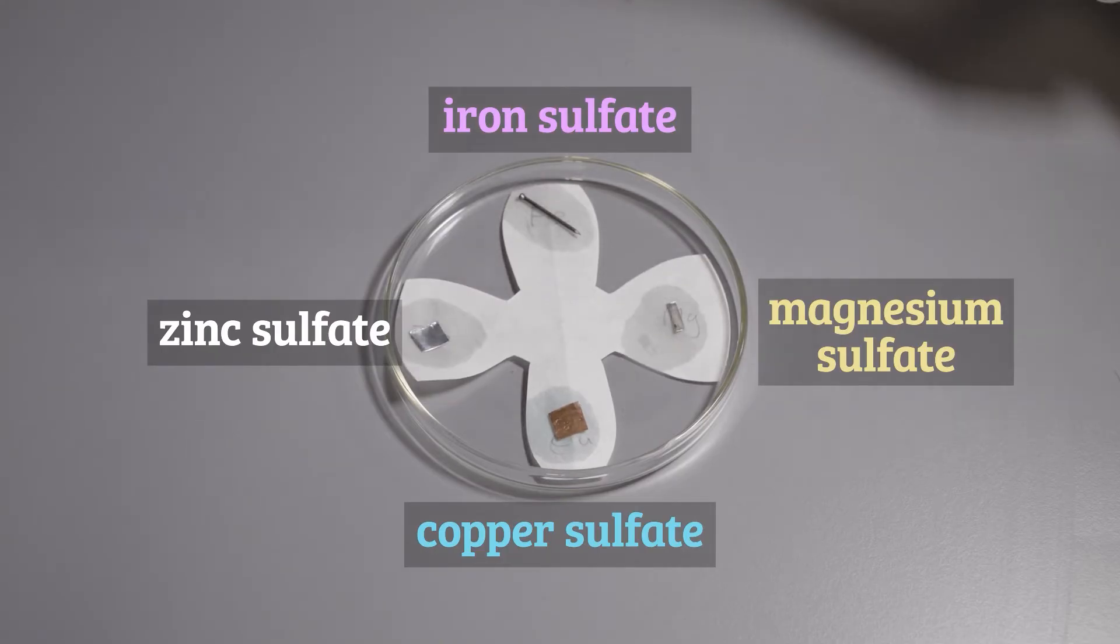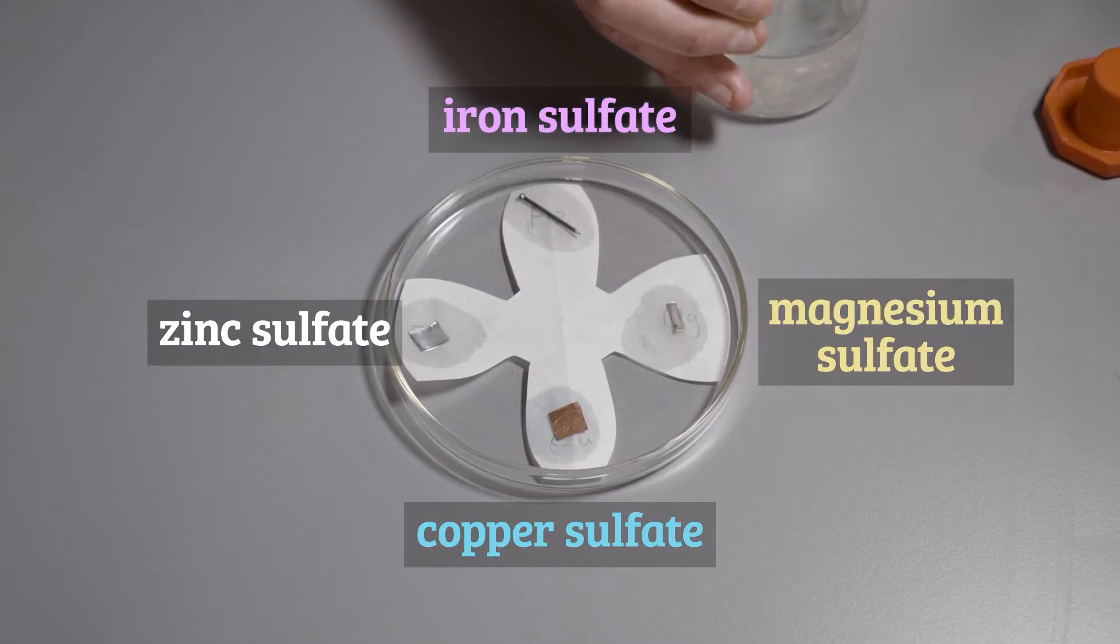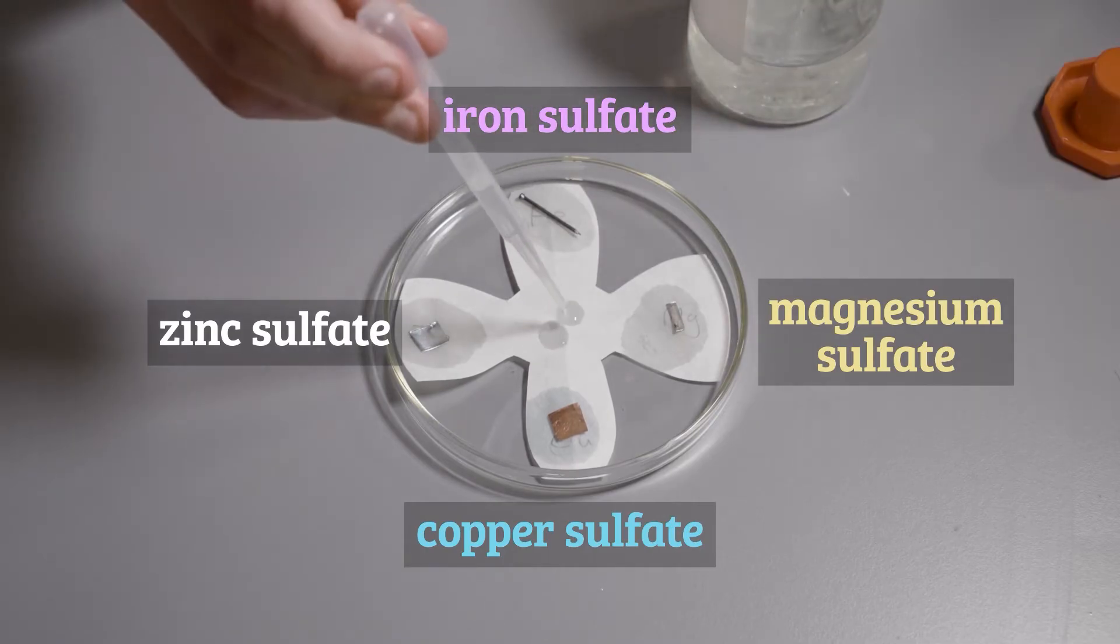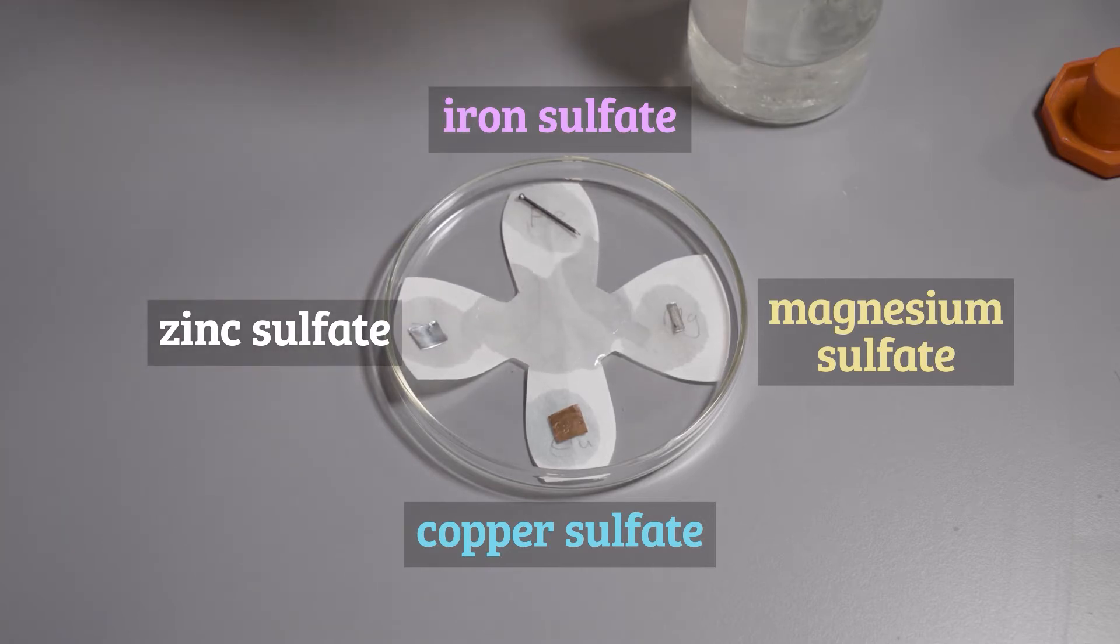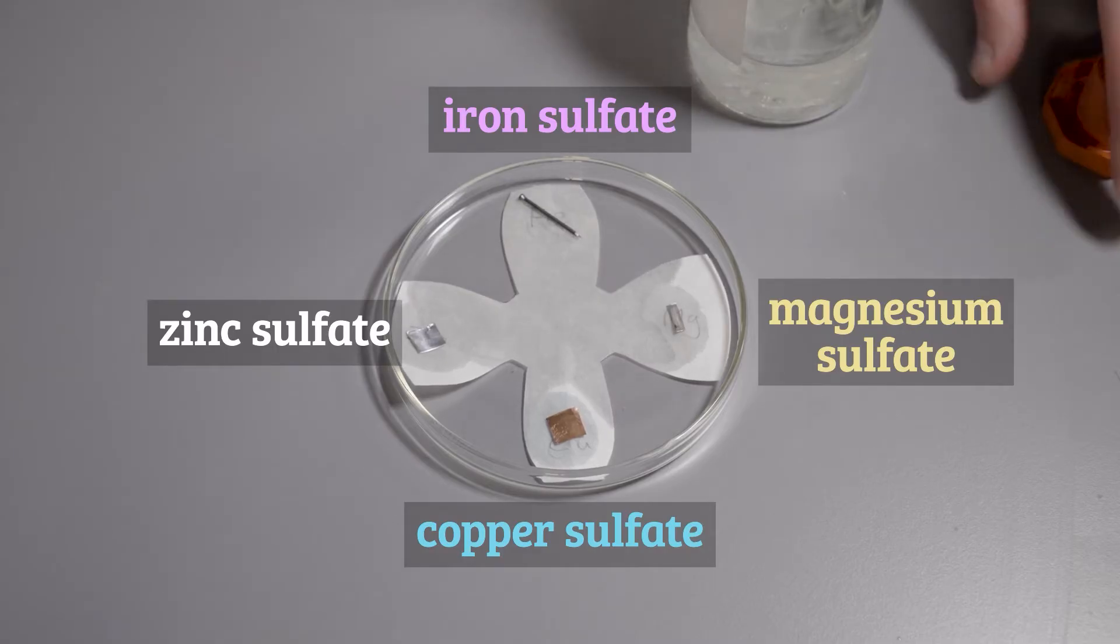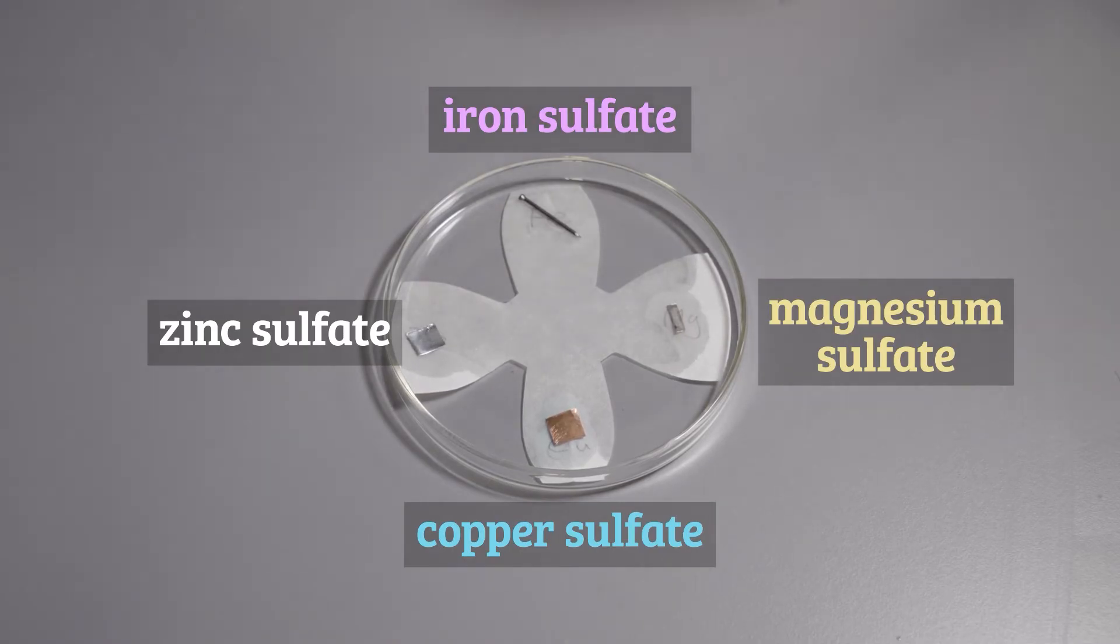The metal in contact with the solution containing its ions forms a half cell. To connect these half cells with a salt bridge we simply add a few drops of a saturated solution of potassium nitrate to the centre of the filter paper. We need to add enough so that it soaks out and meets the other damp areas of the metal solutions. The salt bridge now connects the half cells in the electrical sense because ions can flow from and into the salt bridge.